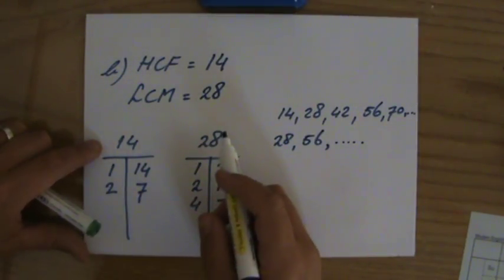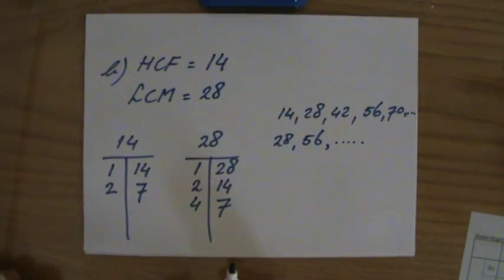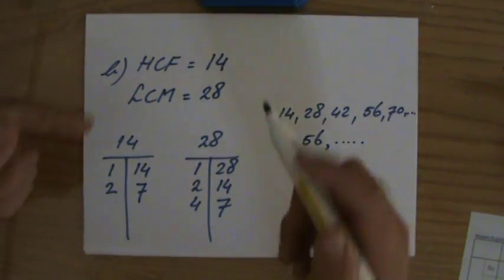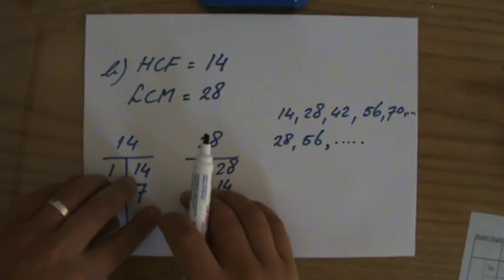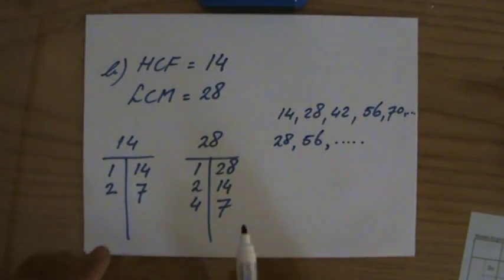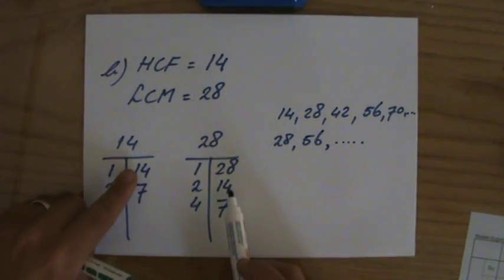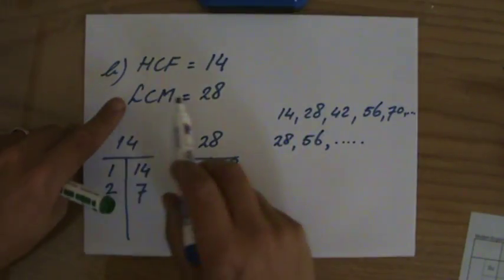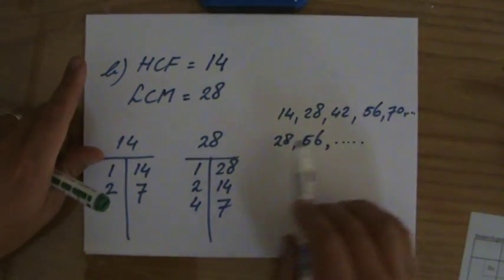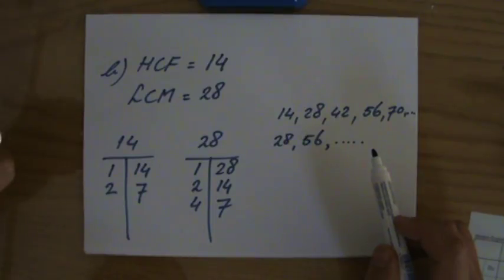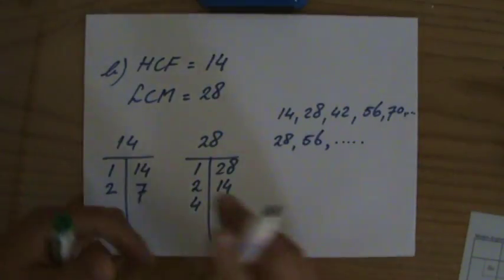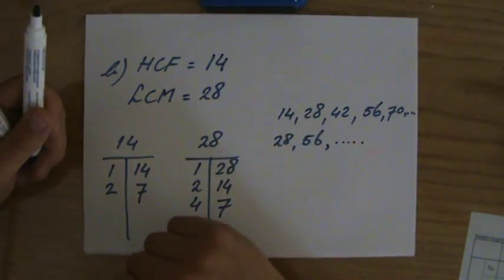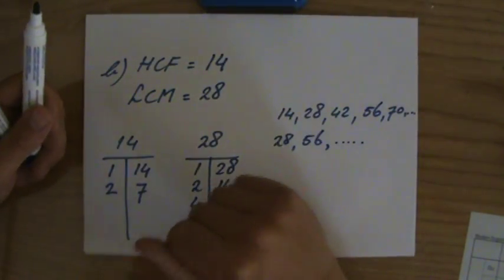So to summarize: for the highest common factor, write down the factors of your numbers and determine which is the highest one they share — in this case 14. For the lowest common multiple, write down a few multiples of each number and find the lowest one they have in common. All right, I wish you all the best and I'll see you later.